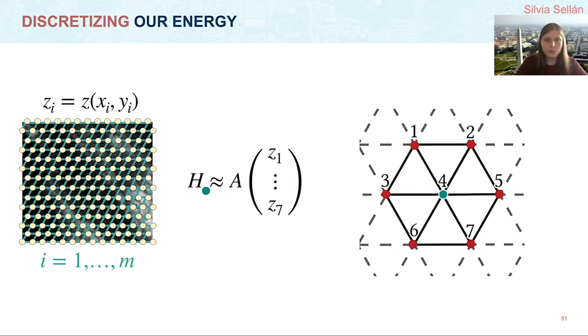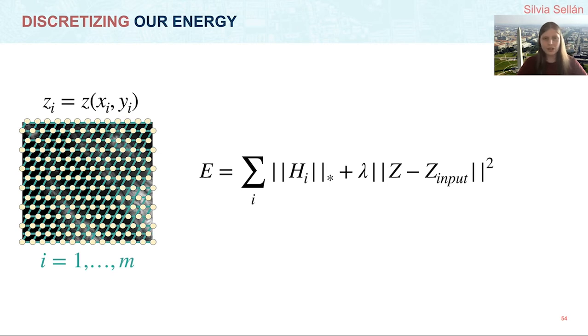Also note that if we combine A with a selection matrix that identifies each point to its local neighborhood, we can rewrite the Hessian at this green point as some matrix A, which is different for every point, times our capital Z column vector. So now we can rewrite our discrete energy in terms of Ai, which is this matrix that combines the linear fitting of a Hessian with the selection matrix of the neighborhoods of each point, lambda, which is a user-determined parameter that balances these two parts of the energy, and Z input, which is simply the input heightfield.